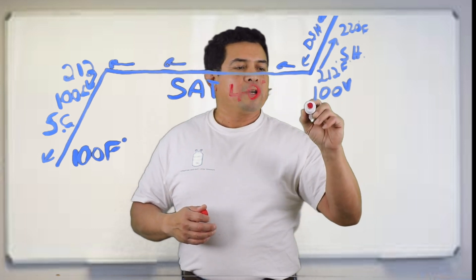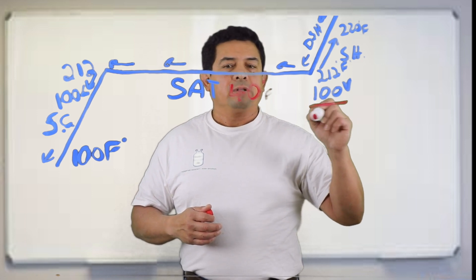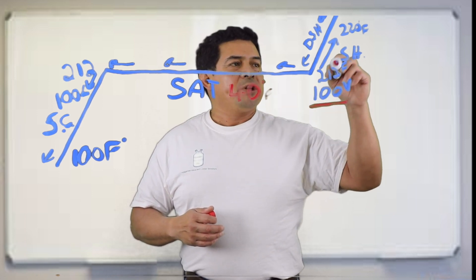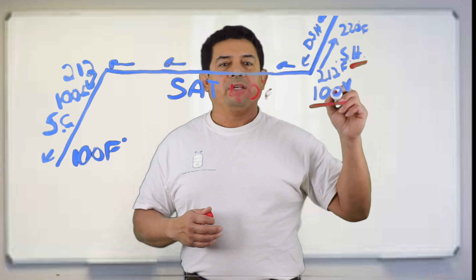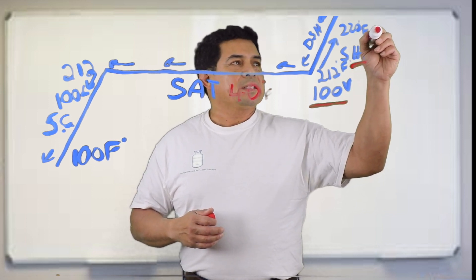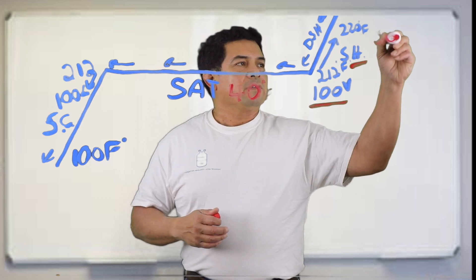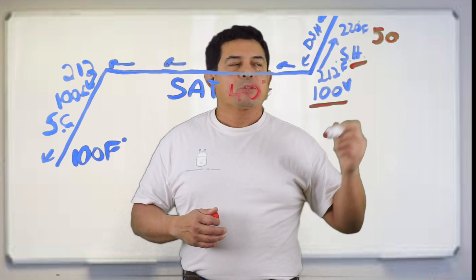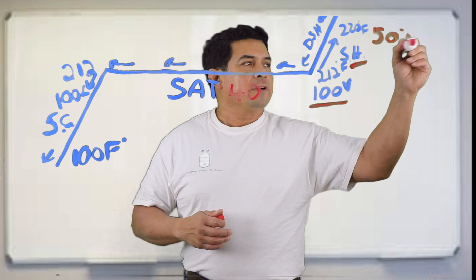Once it is at 100% vapor, it's still going to be at 40 degrees. But now what are we doing? We're superheating. And we're raising the temperature to, let's say, 50 degrees, 50 degrees Fahrenheit.